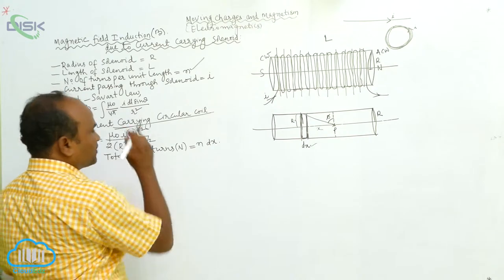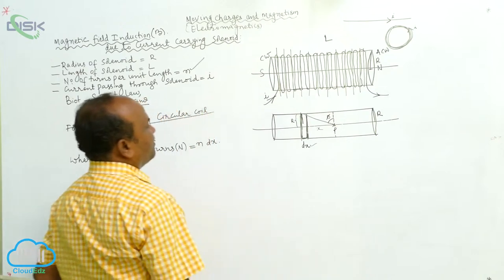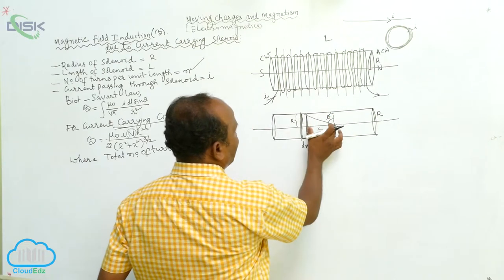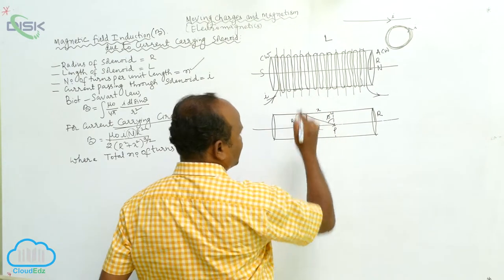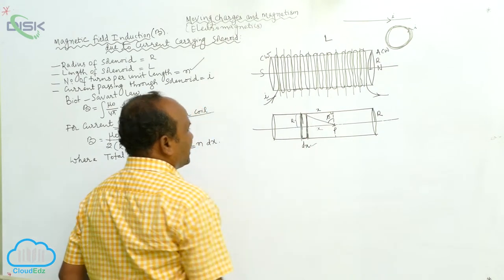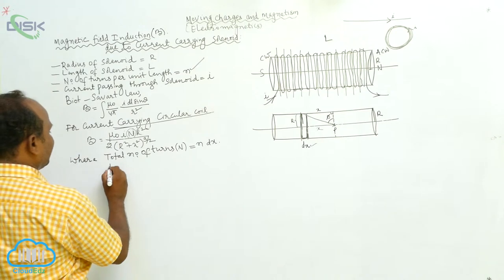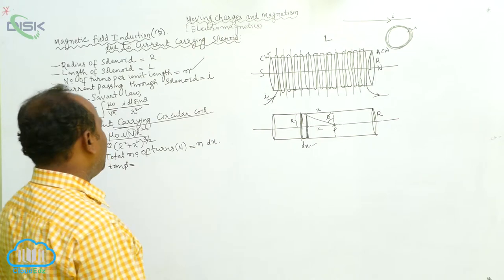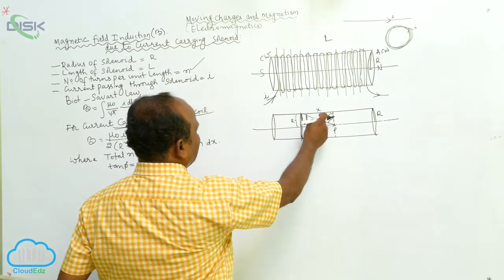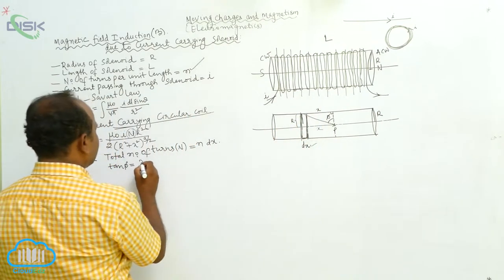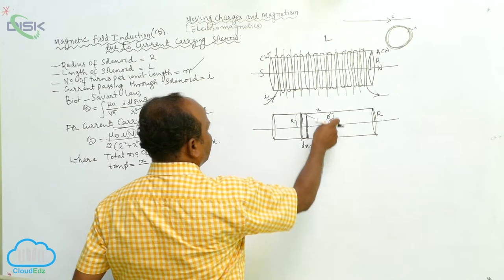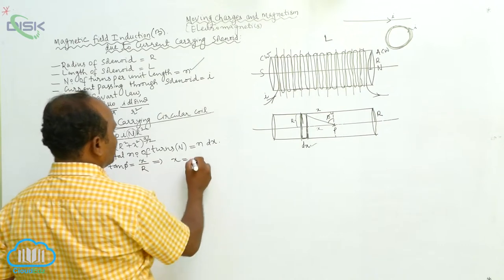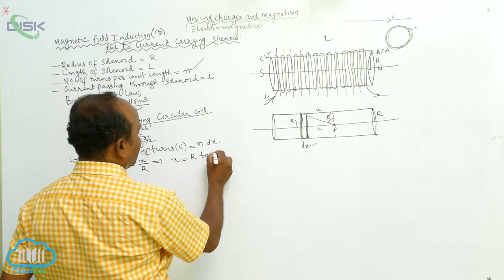Now, what is x from this triangle? From this triangle, this is the perpendicular. This is x, and this is also x. Now we can define tan φ. tan φ is equal to opposite side by adjacent side. The opposite side is x, and the adjacent side is r. Therefore, x is equal to r·tan φ.